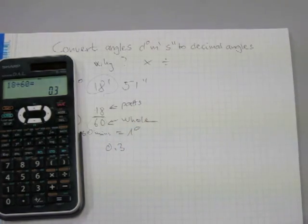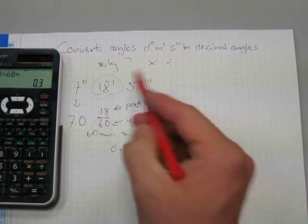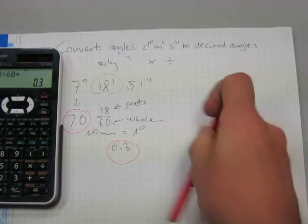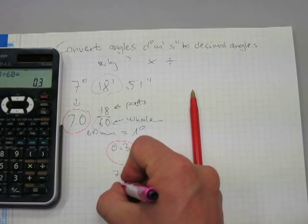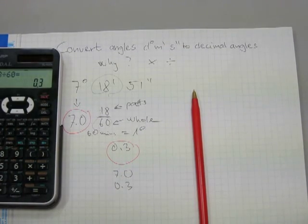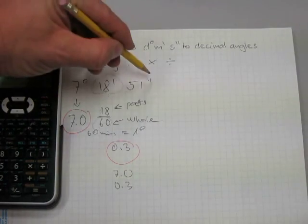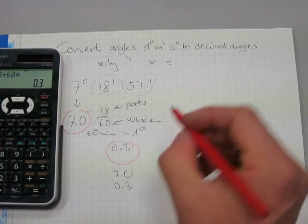So far, 7 degrees and 18 minutes is the same as 7.0 and 0.3, and we have to add these up, the 7.0 and the 0.3. But there is one more amount that has to come from the 51 seconds part here. Let's do the same.